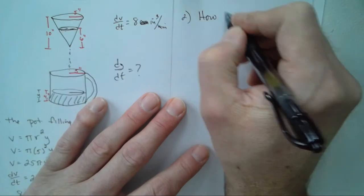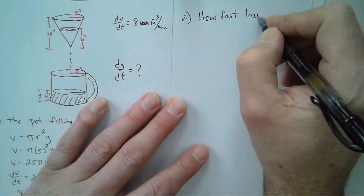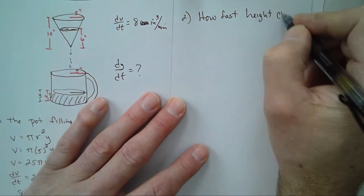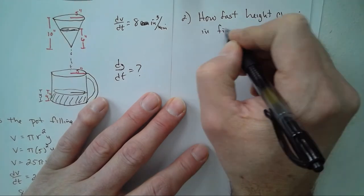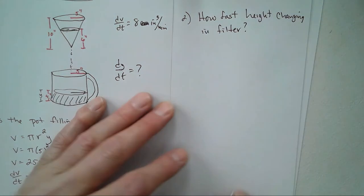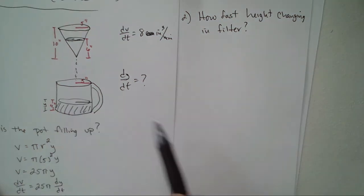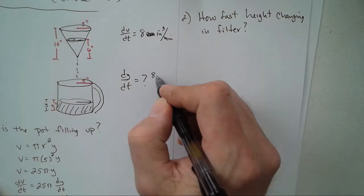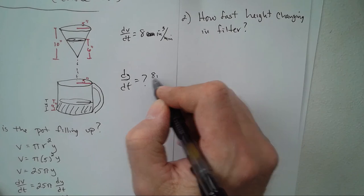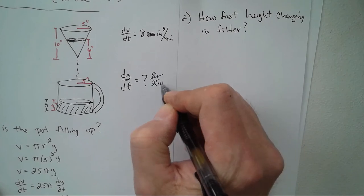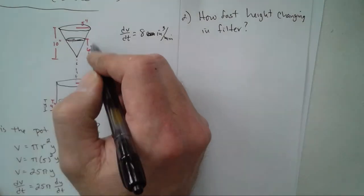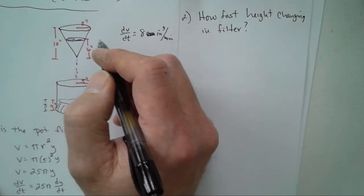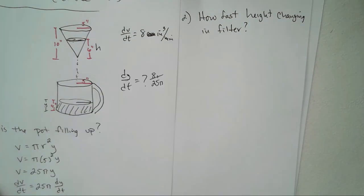How fast is the height changing in the filter? Okay, here's what we know. dy/dt we just found that to be 8 over 25π, but that's this y. So I guess we'll call this our height this time and my radius.